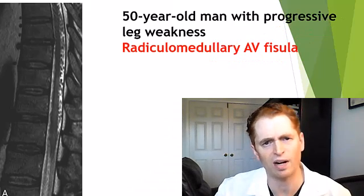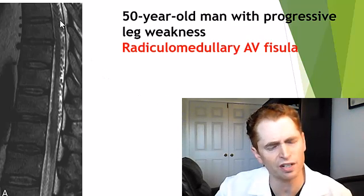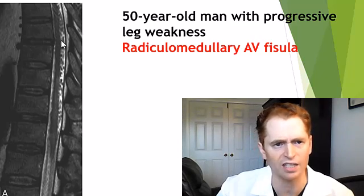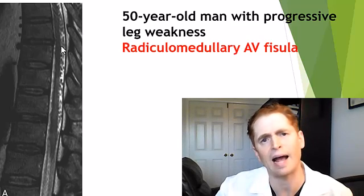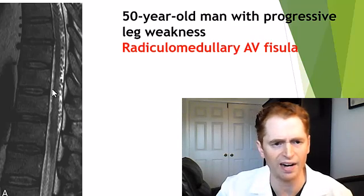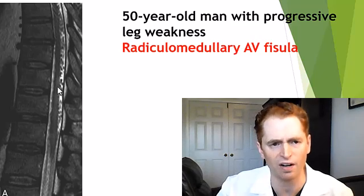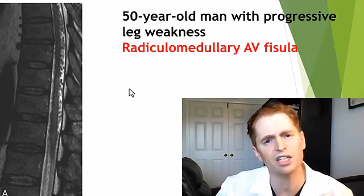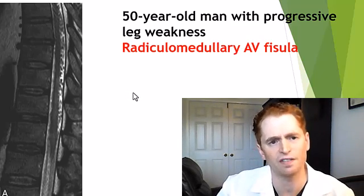This is the spine MRI of a 50-year-old man with progressive leg weakness. Posterior to the spine, you see small dark dots consistent with blood vessels — this is a radiculomedullary arteriovenous fistula, an abnormal connection between the veins and arteries that can lead to stroke of the spine. There may also be bright signal representing edema or infarct of the spinal cord. This lesion can be treated with catheter embolization to resolve the fistula, though it's quite risky.